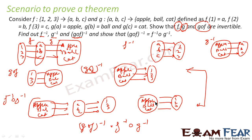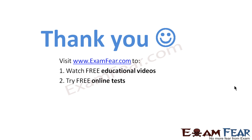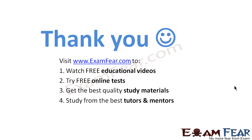So, what we have done here: we had function f, we had function g, we found f⁻¹ and g⁻¹, we found g∘f and then (g∘f)⁻¹. We were asked to prove f⁻¹∘g⁻¹ equals (g∘f)⁻¹, and we showed that both are the same. Thank you. Visit examfear.com to watch free educational videos, try free online tests, get the best quality study materials, and study from the best tutors and mentors. Thanks once again.